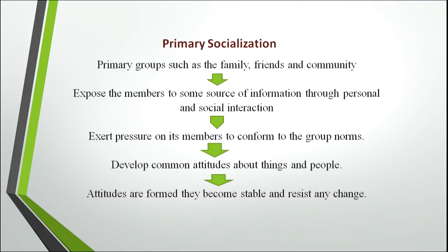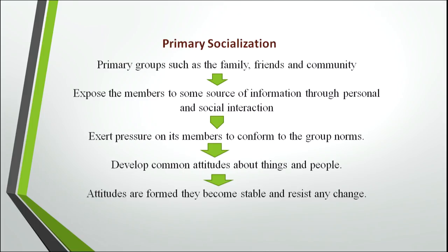Primary groups — family, friends, community, ethnic groups, caste groups — give the child a social identity. These groups expose members to sources of information through personal and social interaction, and children learn from them. Sometimes these groups exert pressure on members to conform to group norms — expecting members to think in the same way — which also influences the child's attitude. The attitudes formed this way can be very stable and resistant to any kind of change.